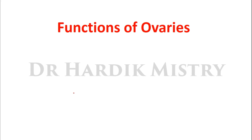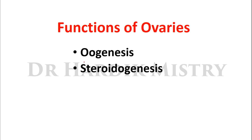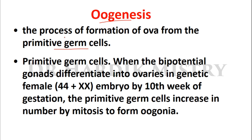In this video we are going through functions of ovaries - oogenesis and steroidogenesis. Oogenesis is the process of formation of ova from the primitive germ cells. When the bipotential gonads differentiate into ovaries in a genetic female containing 44 plus XX chromosomes, by the tenth week of gestation the primitive germ cells increase in number by mitosis to form the oogonia.